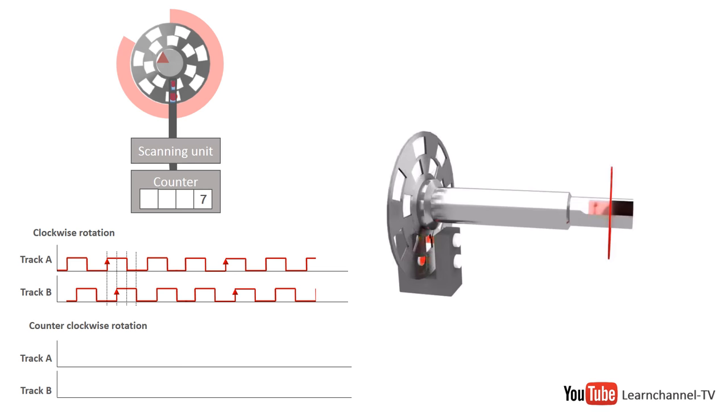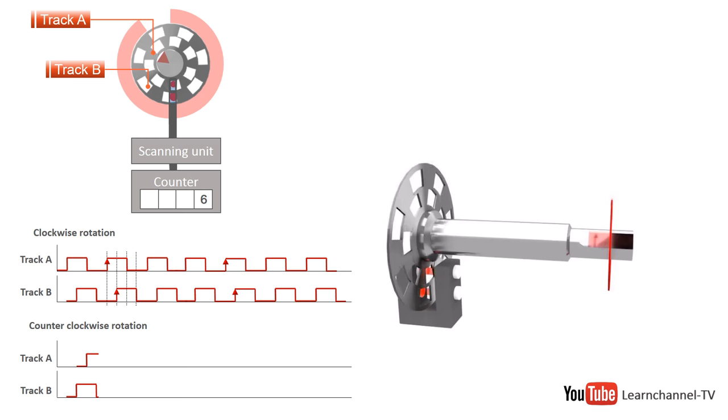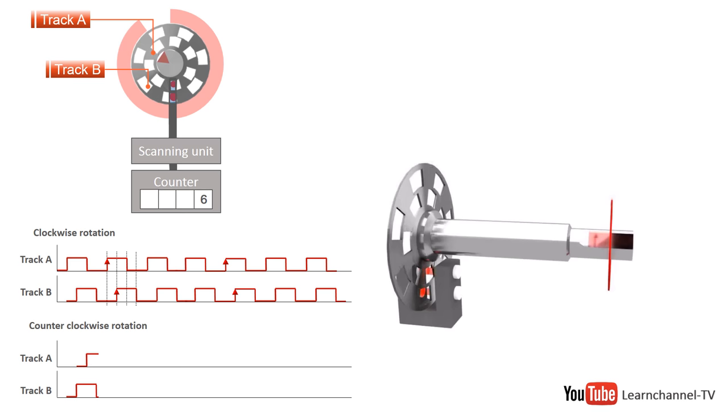Here, you can see the signal form coming from clockwise rotation. To have a comparison, you now see the signal form coming from counterclockwise rotation. Now, the signal coming from track B is leading.